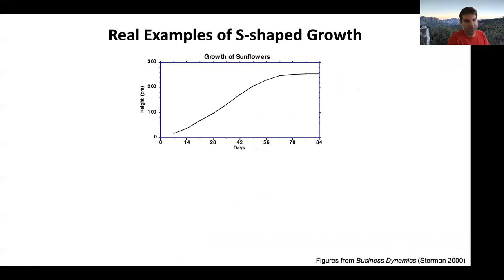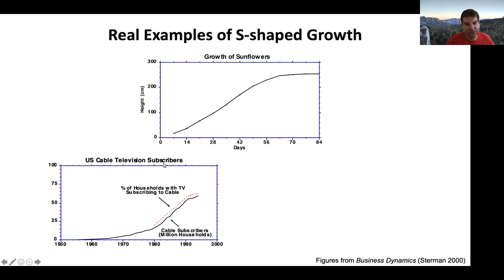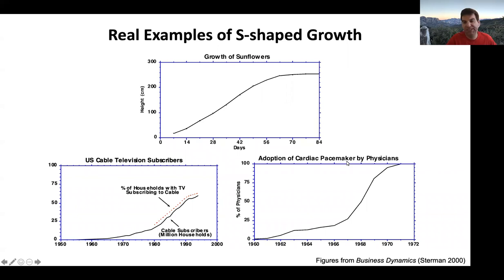Here are some examples of real S-shaped growth. There's real data for the growth of sunflowers — the height of a sunflower grows over time until it eventually saturates. We also see S-shaped growth in markets like US cable television subscribers: initially it grows slowly, picks up, grows quickly, and then there's an inflection point where it rounds out as it approaches a maximum number of people who would ever adopt cable.